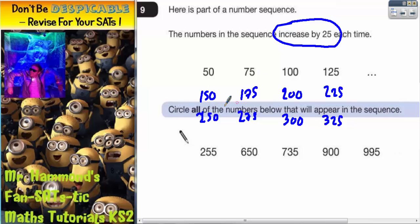You should have noticed that if we keep going up in 25s, the numbers are either going to end in 50, 75, two zeros, or 25. So anything that ends in 50, 75, two zeros, or 25 is going to be in the sequence.